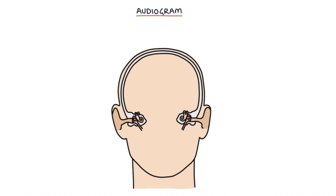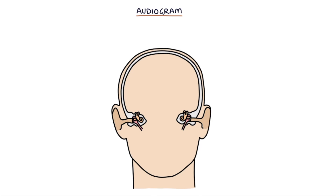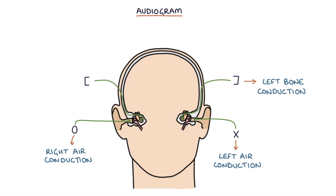Hearing is tested in both ears separately, and both air and bone conduction are tested independently. The following symbols are used to mark each of these separate measurements: X is used to mark left-sided air conduction; a square-shaped closed bracket is used to mark left-sided bone conduction; an O is used to mark right-sided air conduction; and a square-shaped open bracket symbol is used to mark right-sided bone conduction.